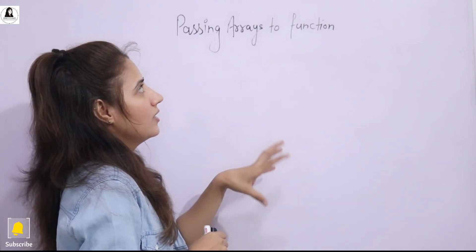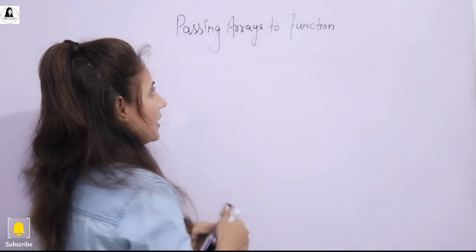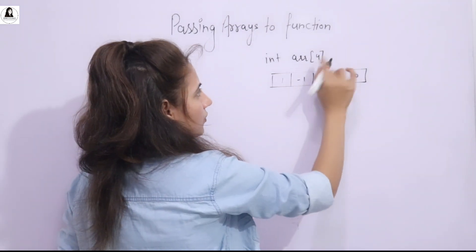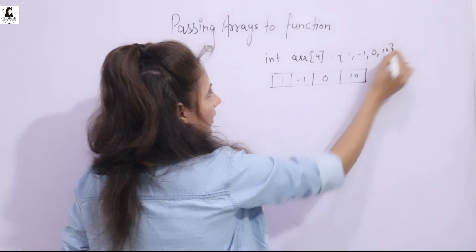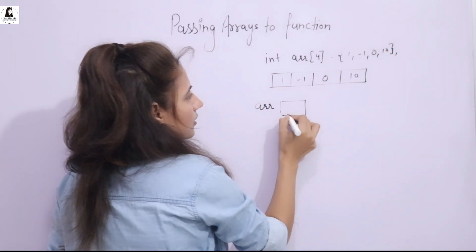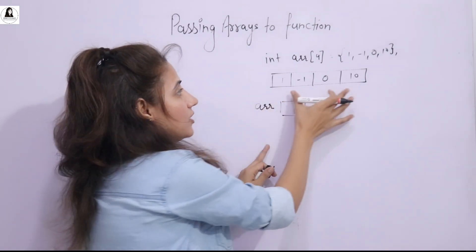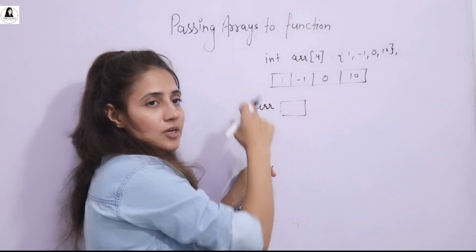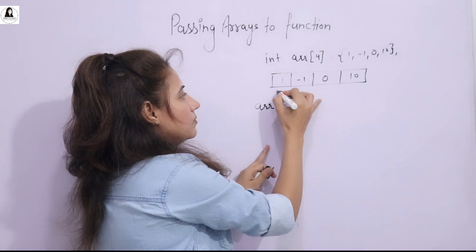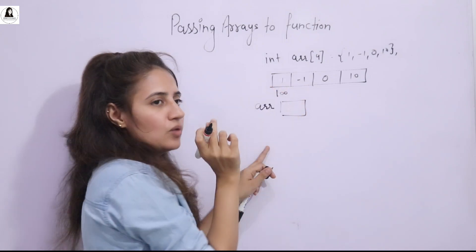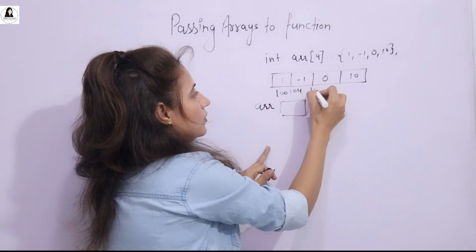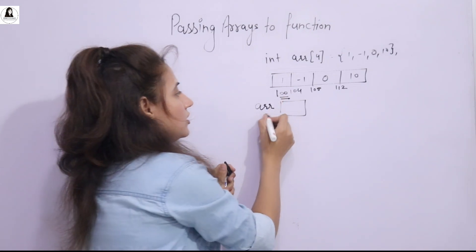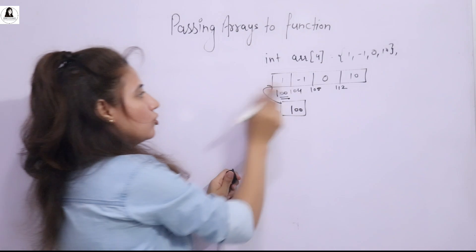To understand this, first you need to understand what an array is — the basic point. If I have an array of integers with size 4, suppose the values are 1, -1, 0, and 10. If I say ARR — the array name — it will store the base address of this array, meaning the address of the first element. Suppose memory has been allocated starting at address 100. Each integer element takes 4 bytes, so elements are at 100, 104, 108, 112. ARR will store 100.